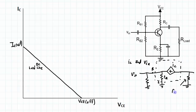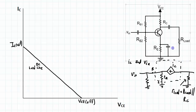designate as little r load, and in the AC model it's going to be equal to this resistor in parallel with RC. So since we're dealing with the AC model I'm going to get rid of this.